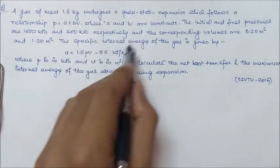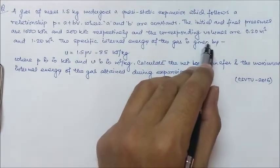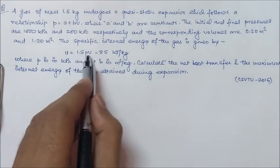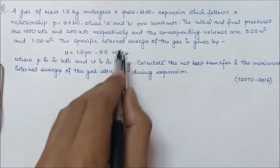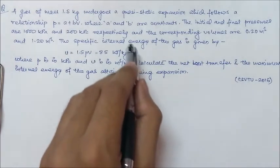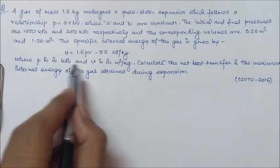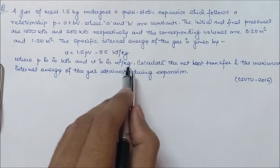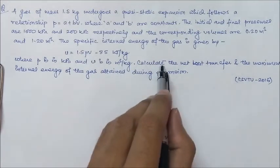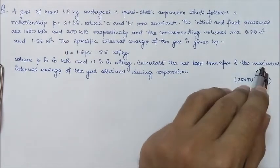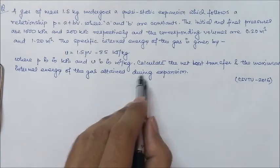The specific internal energy of the gas is given by small u equal to 1.5PV minus 85 kJ per kg, where P is in kPa and V is in m³ per kg. Calculate the net heat transfer and maximum internal energy of the gas attained during expansion.